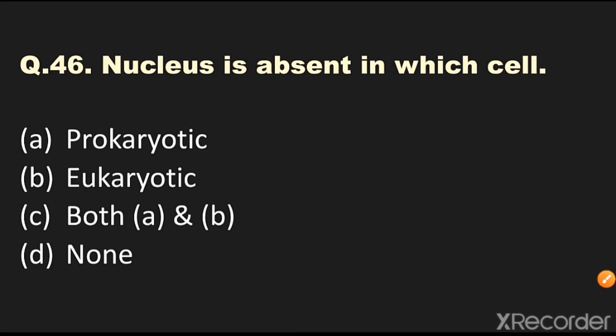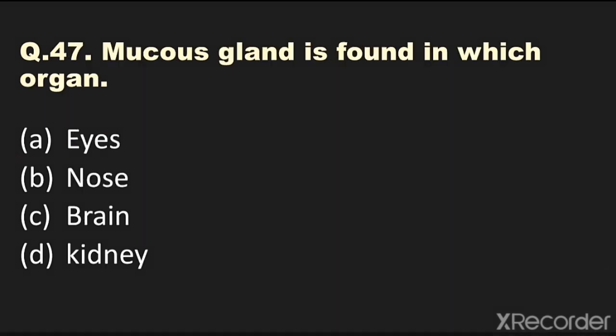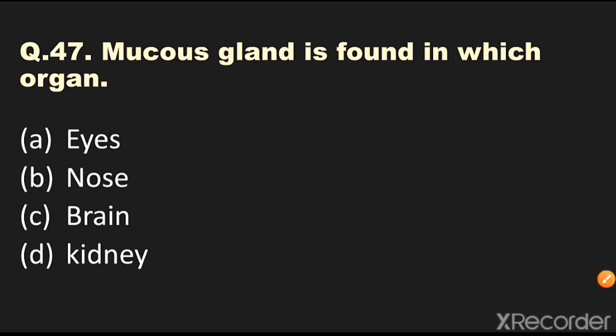Question number 47: Mucus gland is found in which organ? Options are eyes, nose, brain, or kidney. The answer is nose — mucus gland is located in the nose.